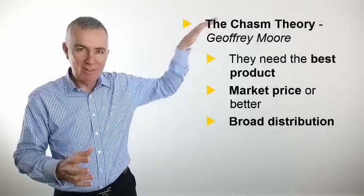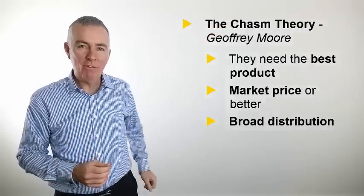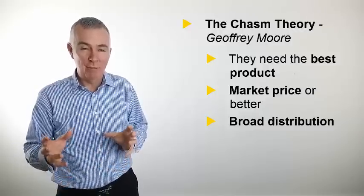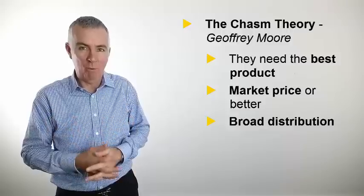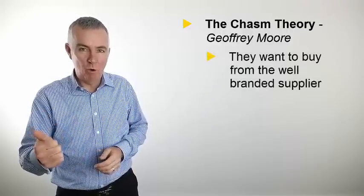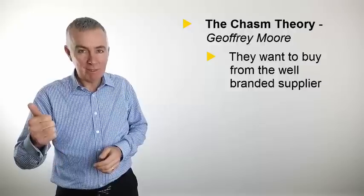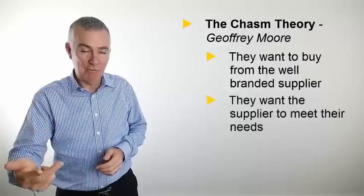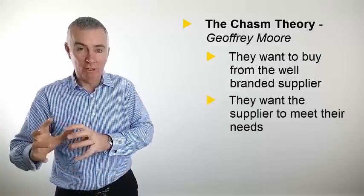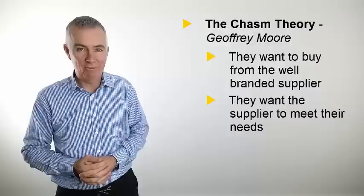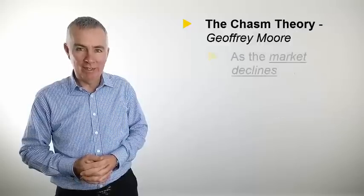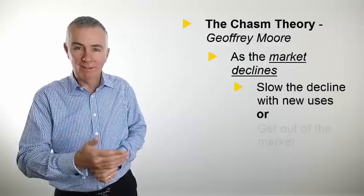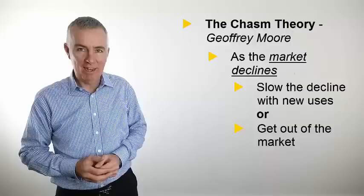When the market peaks and starts to max out, they basically want to prescribe the rules. They're a third or fourth time buyer at this stage and they know what they want and they want you to comply with their expectations. They want to buy from the well-branded supplier to be a safe bet and they want that well-branded supplier to meet their needs as they perceive them. So now you're into customizing around their well-shaped needs. As the market declines, you either need to slow the decline with new uses or get out of the market as gracefully as you can.